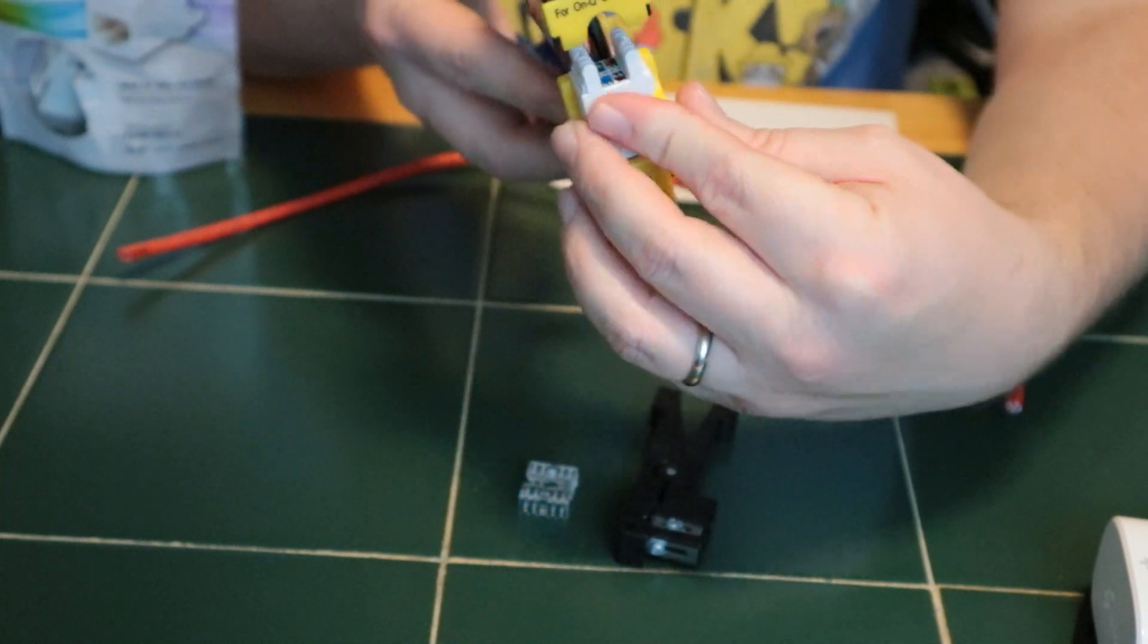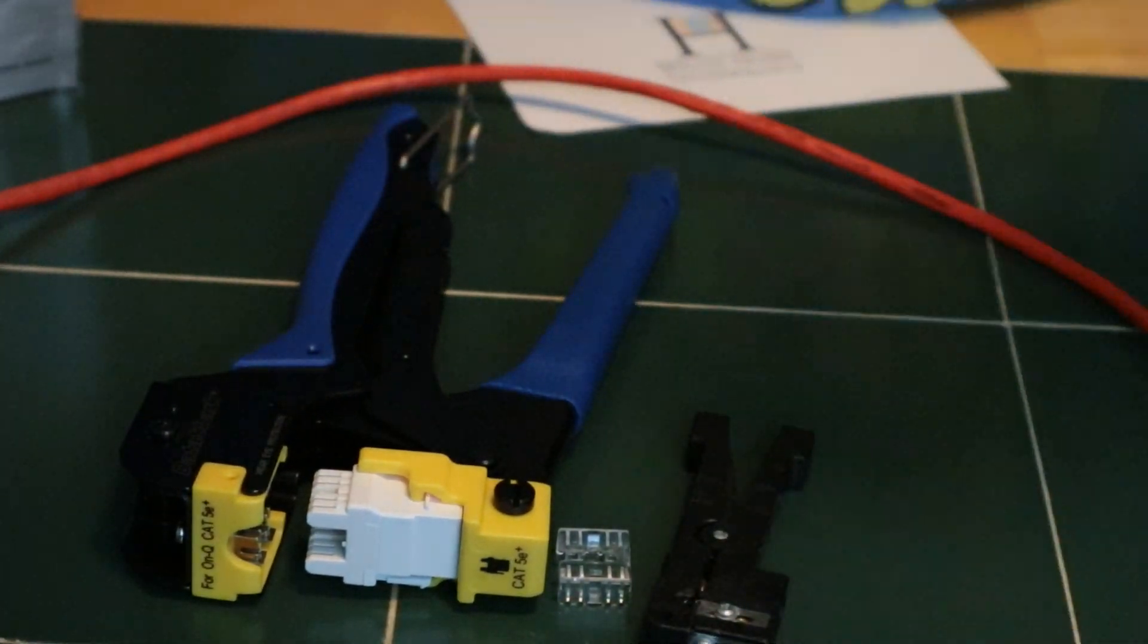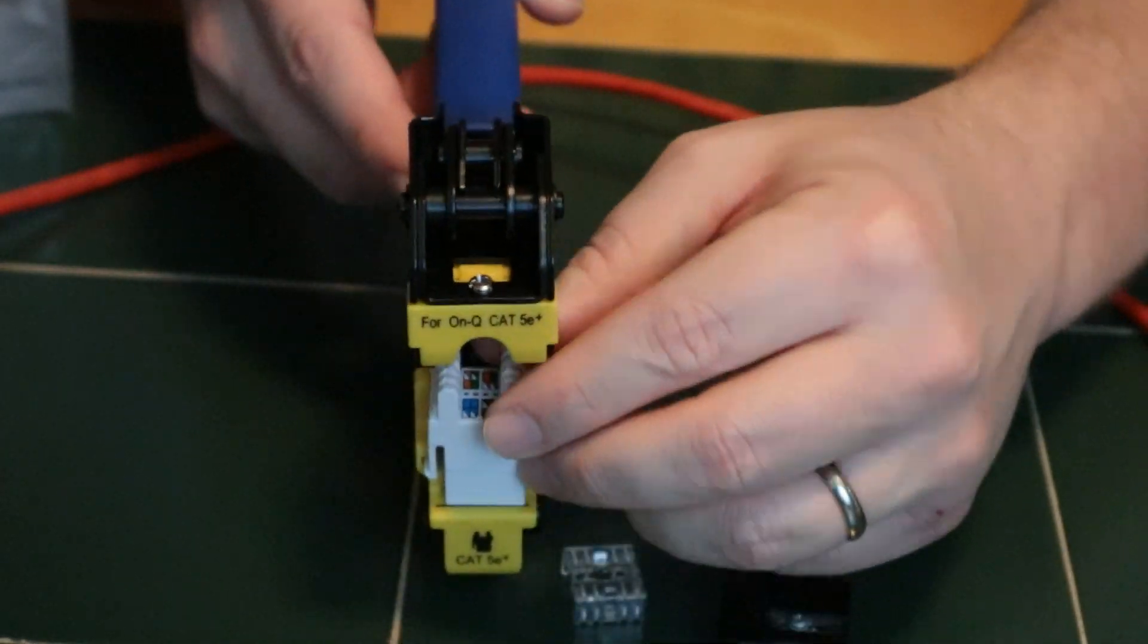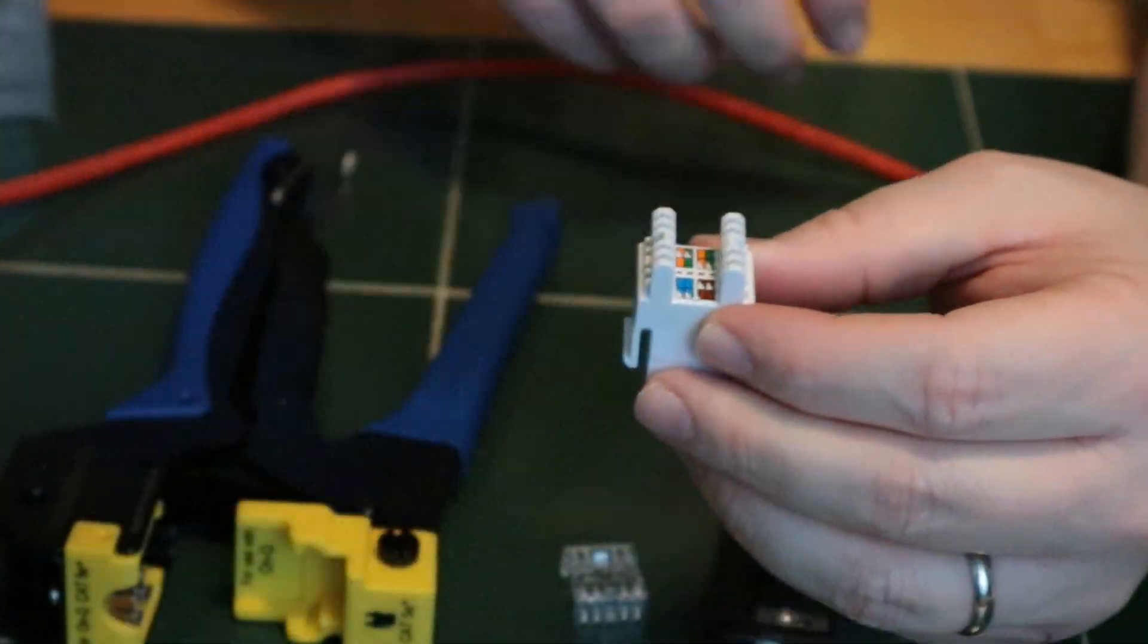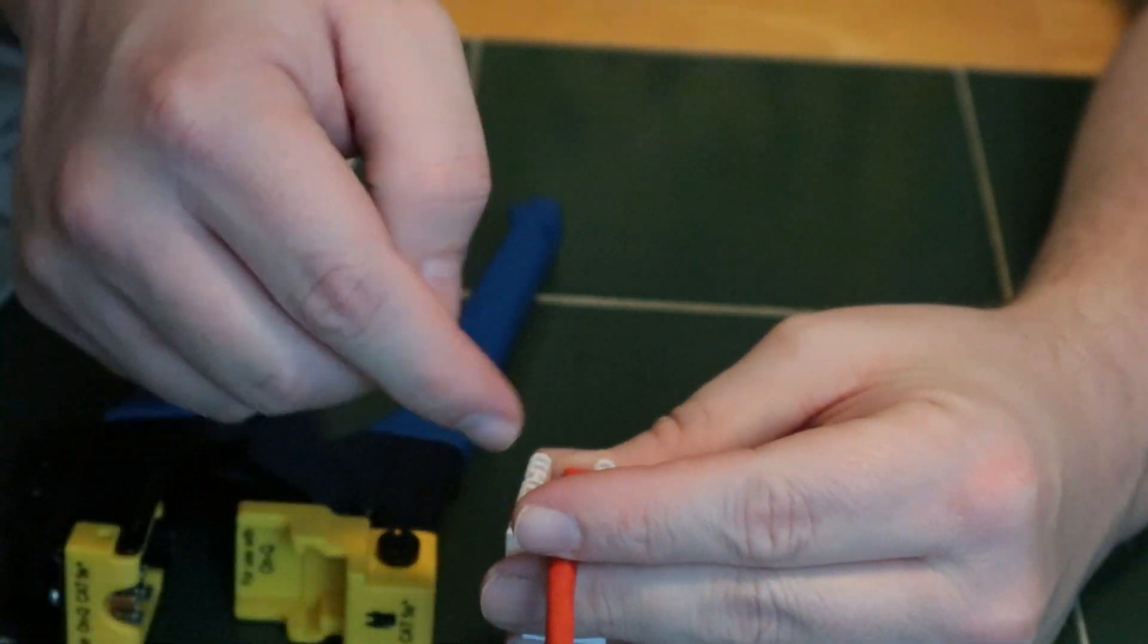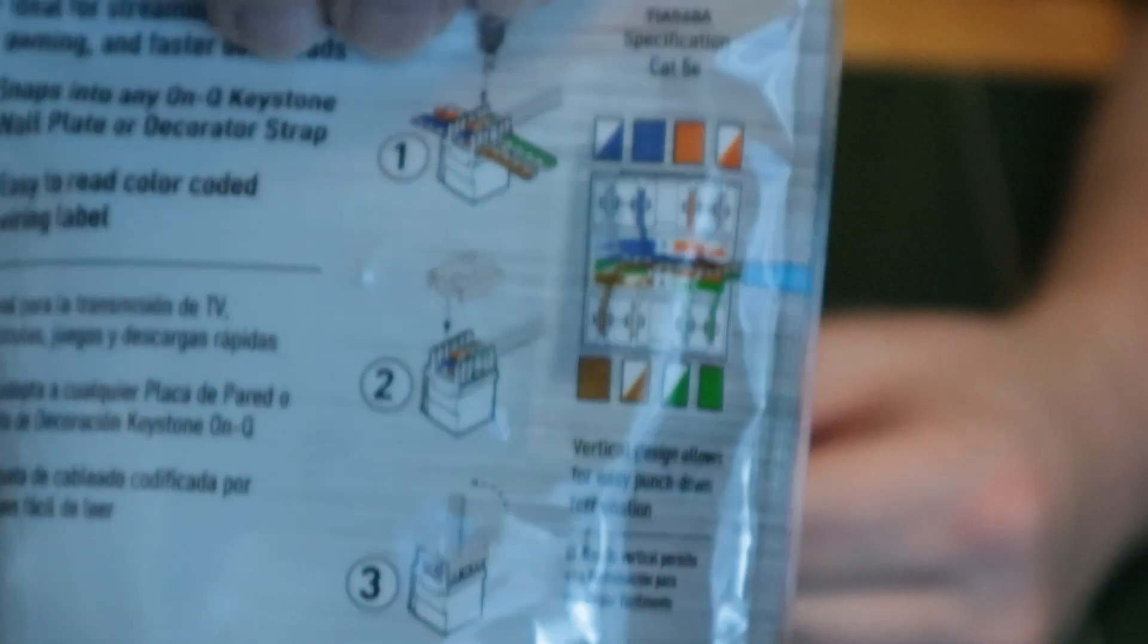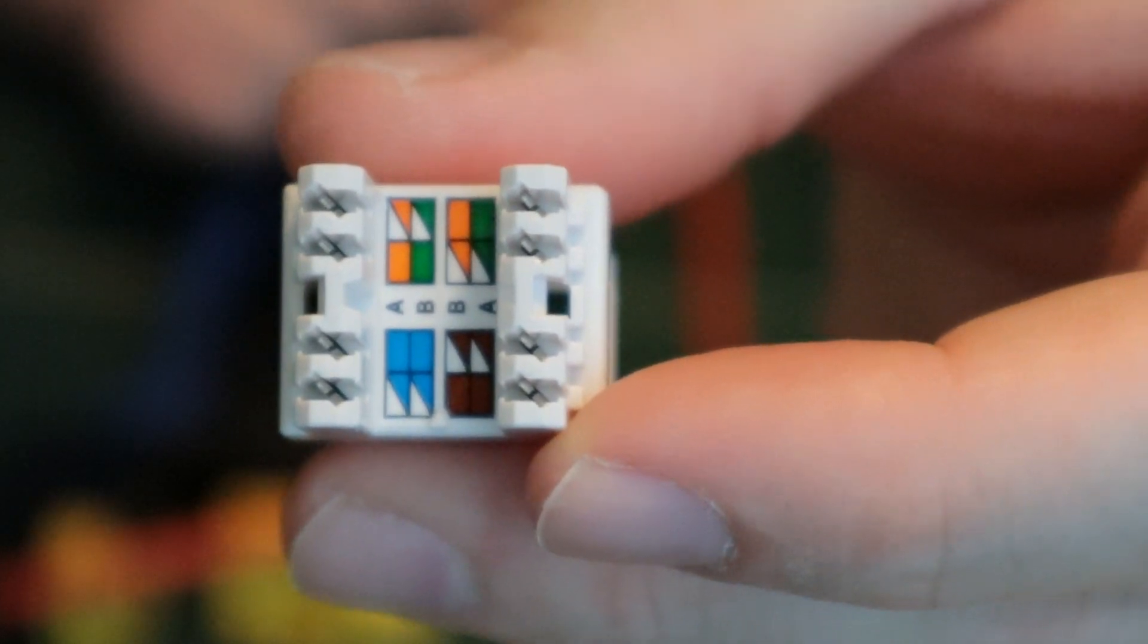We're going to terminate on B standard. Cable is going to come in on the blue and brown side, so it's going to come in like this and we're going to strip this off, lay that in there, and then we are going to terminate this. There are also instructions on the back just in case you forgot. The jacks are also labeled to tell you which is the A standard and which is the B standard. We will be doing the B standard.